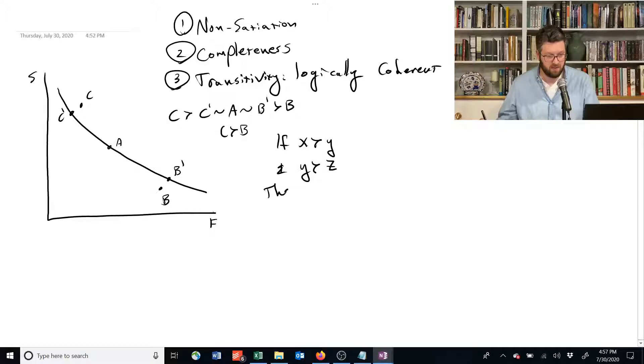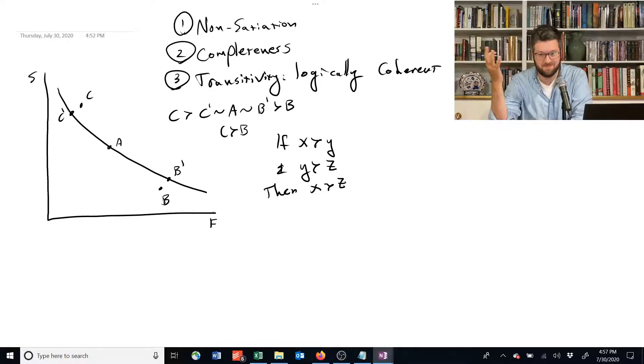If X is preferred to Y and Y is preferred to Z, then X is also preferred to Z. It just means you can carry through these preferences. If I prefer this to that and that to something else, then I also prefer this to something else.